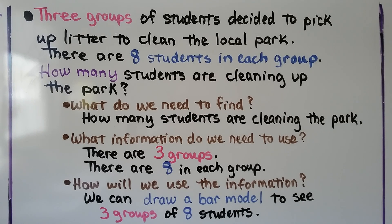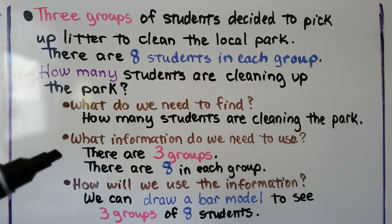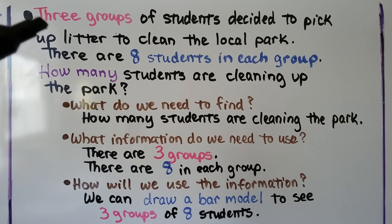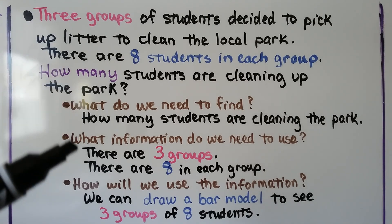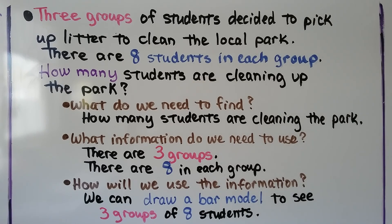Three groups of students decided to pick up litter to clean the local park. There are eight students in each group. How many students are cleaning up the park? We ask ourselves: what do we need to find? We need to find how many students are cleaning the park. What information do we need to use? There are three groups with eight students in each group. We can draw a bar model to see three groups of eight students.